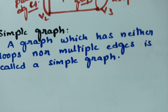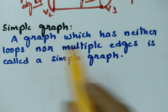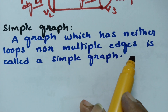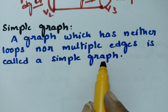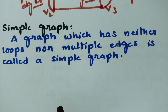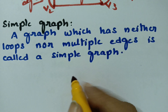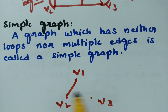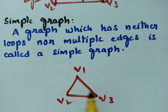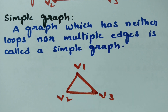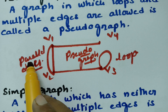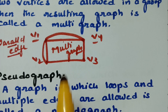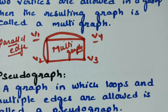A simple graph is a graph which has neither loops nor multiple edges — it is the reverse of a pseudo-graph. It should not contain parallel edges and should not contain loops. If a graph has parallel edges and loops it is a pseudo-graph; if it has only parallel edges it is a multiple graph; and if it has neither, it is a simple graph.